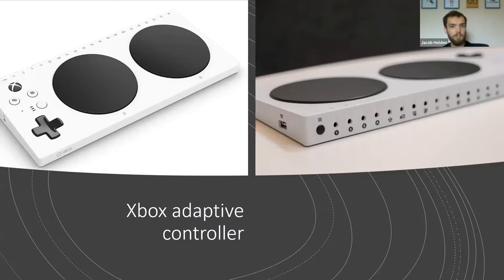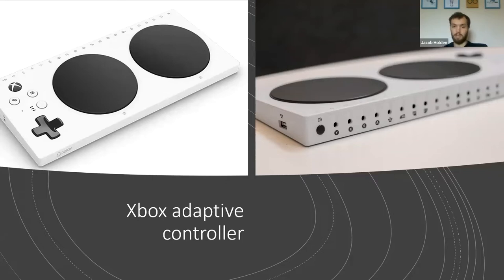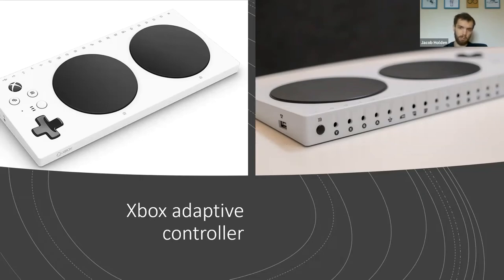One of the biggest pieces of kit we use very frequently is the Xbox Adaptive Controller — a product released by Microsoft that had input from various organisations, including Special Effect. It's an official Xbox controller that connects natively to an Xbox One, Xbox Series S, or Xbox Series X console and also PC. It allows you to plug in external joysticks and switches, so we can position them wherever the person has movement. It's been a real game changer — completely plug-and-play.